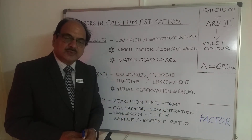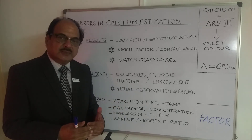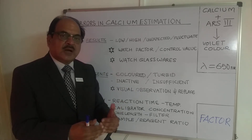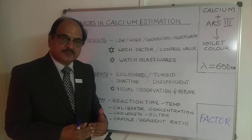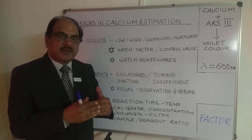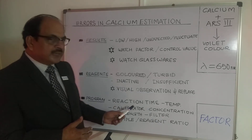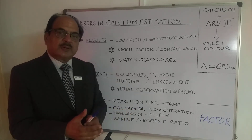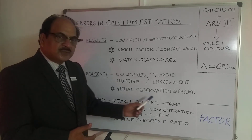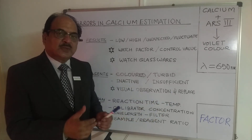Now let's discuss program-related errors. Reaction time and reaction temperature are critical issues, but as far as calcium arsenazo is concerned, the reaction time is very fast and whether the reaction is at 37 degrees or room temperature doesn't make a significant difference — it reacts quickly to give a purple color. Since the color is stable for one hour, ensure that you take your absorbance reading within that period.